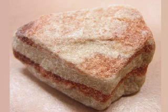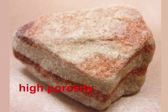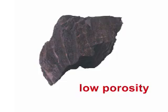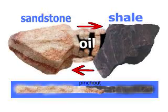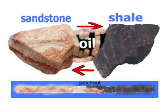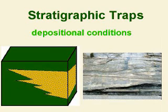The result is that this bed goes from high porosity in the sandstone to low porosity in the shale. When oil later migrates into this area, it gets trapped by the shale and the oil accumulates in the sandstone. Stratigraphic means depositional — it was the way the particles were deposited.